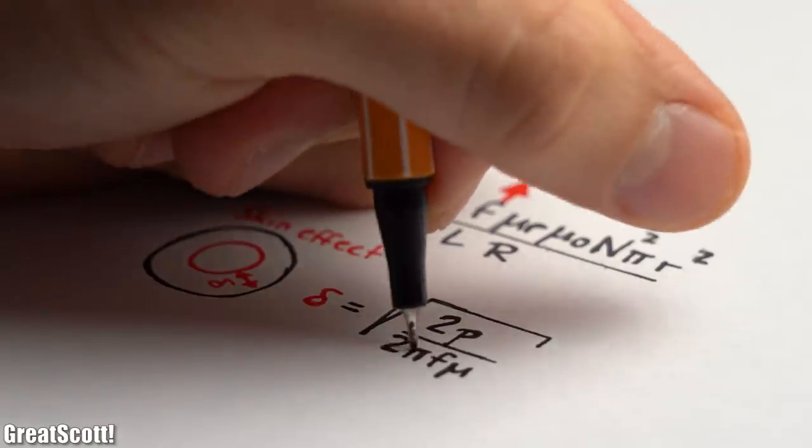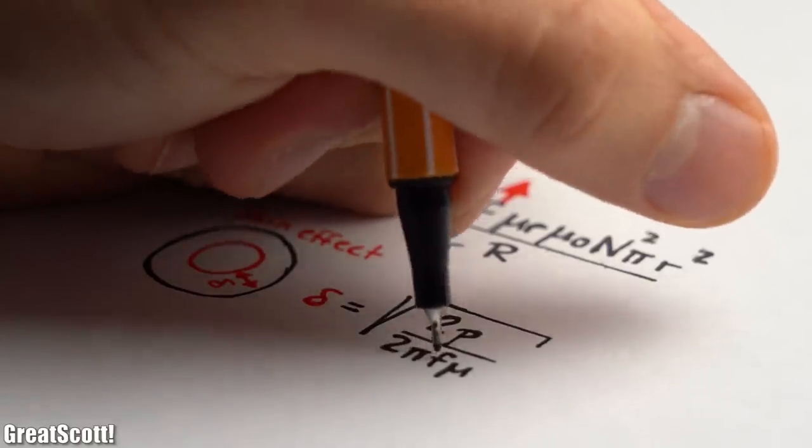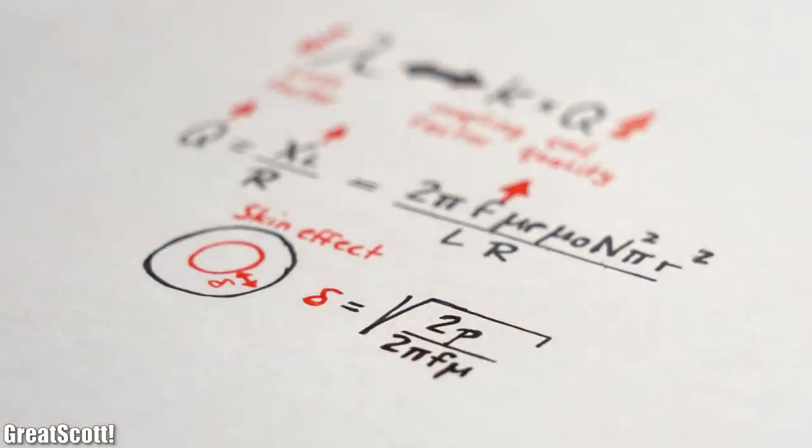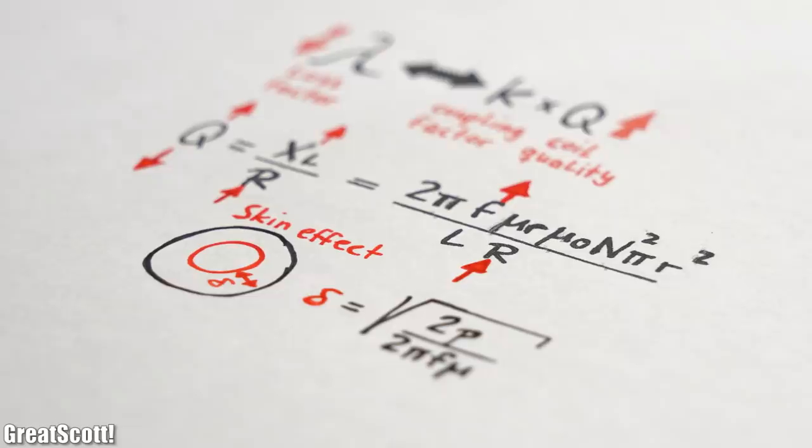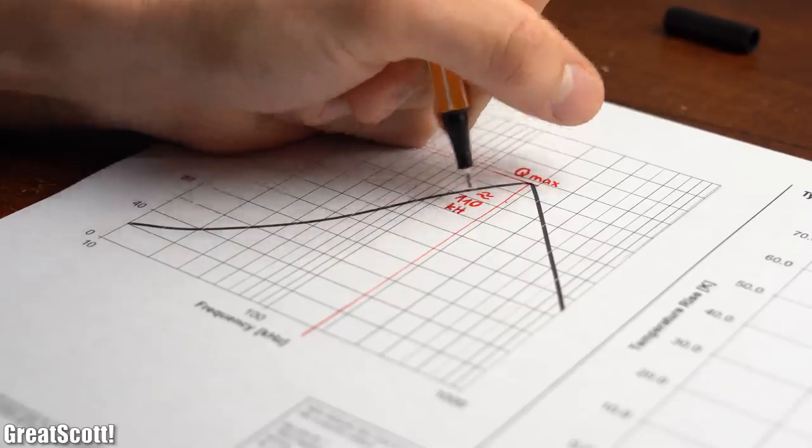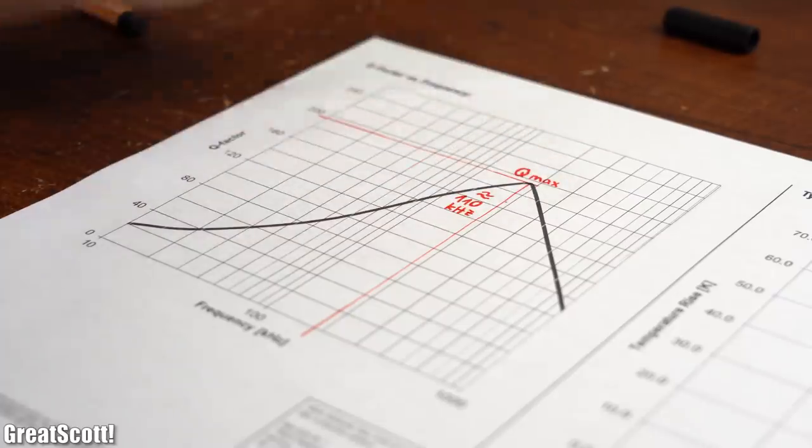Now when looking at the formula of the coil quality, you might be thinking why not just set the frequency super high, and I would have to say that with higher frequencies we get problems like the skin effect, which will increase our resistance and thus lower the coil quality.